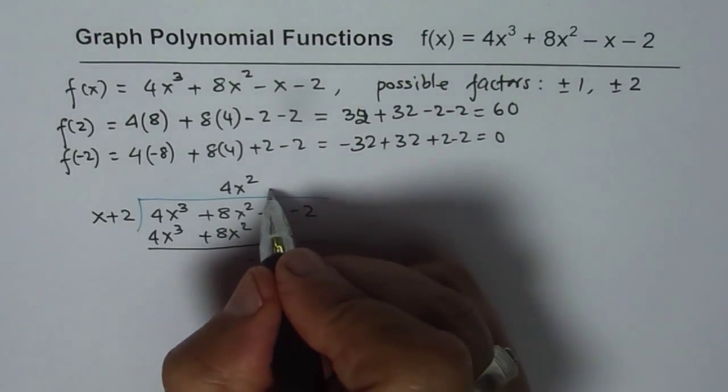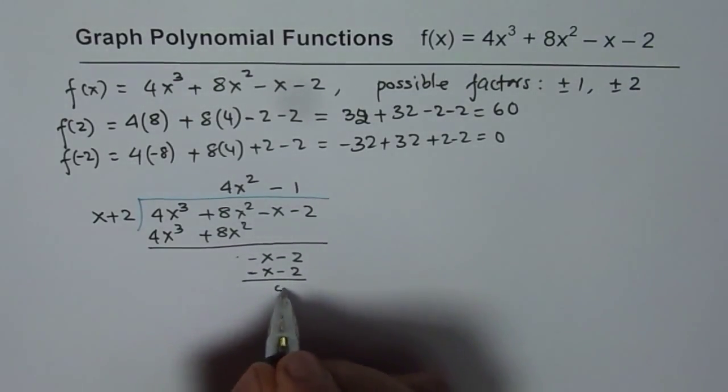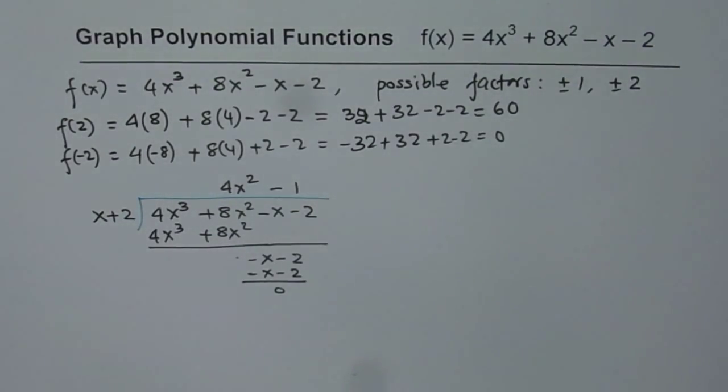Now, that will go minus 1 times. So minus 1 will give us minus x minus 2, 0. So that is how we can write our function.